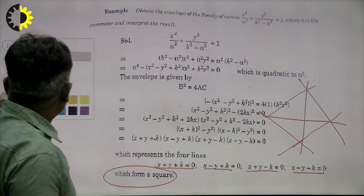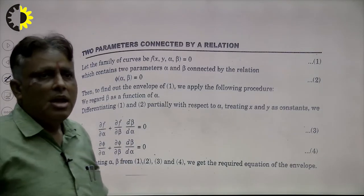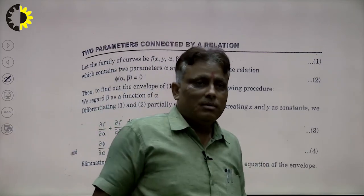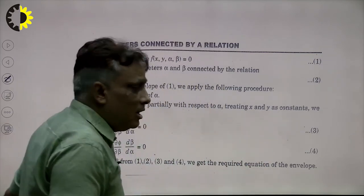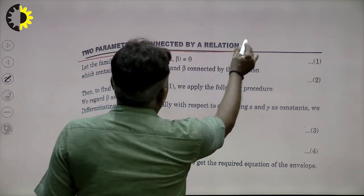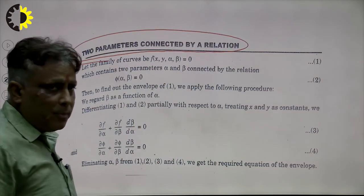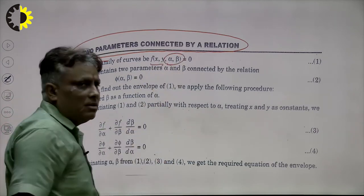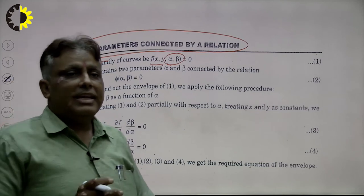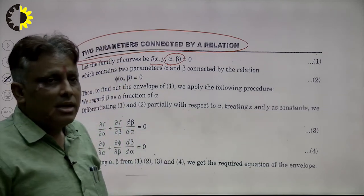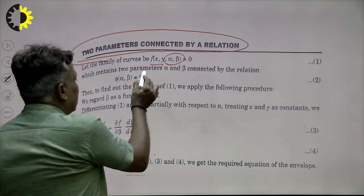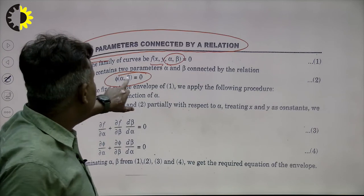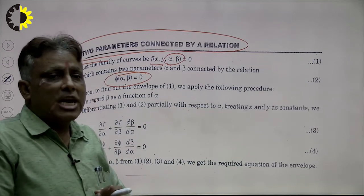Now suppose a student asks: what if the curve has more than one parameter? I write here another topic: two parameters connected by a relation. Suppose in this problem x and y are two variables, and there are two parameters α and β, and there exists a relation between α and β. How to calculate the envelope of such a problem?